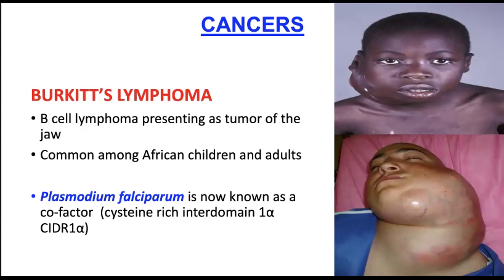The CIDR1-alpha is an erythrocyte membrane protein. This membrane protein interacts with enriched human B cells, and when attached, it causes persistent and aberrant, or abnormal, activation of B cells during chronic malaria. So while the patient has malaria, this receptor site causes abnormal B cells to proliferate, impairing normal B cell function.